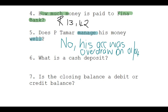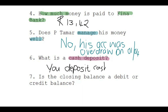What is a cash deposit? A cash deposit is when you deposit or pay cash at an ATM or at a bank teller. These days, you can even do it in shops.